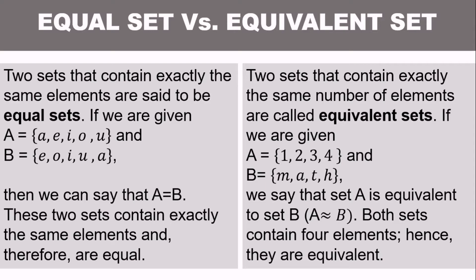For equivalent set, two sets that contain exactly the same number of elements are called equivalent sets. If we are given set A with elements 1, 2, 3, and 4, and for set B we have elements M, A, T, H, we say that set A is equivalent to set B. We use the symbol ≈. Both sets contain four elements, hence they are equivalent. The difference here is that equal set, even if scrambled, as long as all elements in set A are also in set B, with nothing extra or missing, that is equal set.